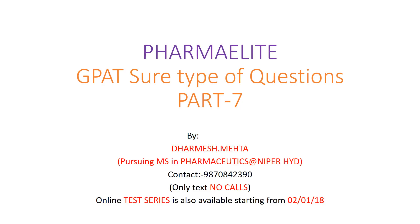I am also running a WhatsApp group named Phamilite where we typically post 5 questions along with solutions. To add yourself to that WhatsApp group, text me your number on 9870842390. Make sure it's only a text and not a call.